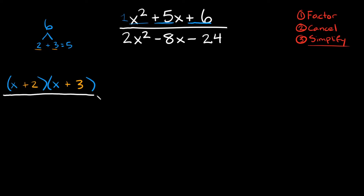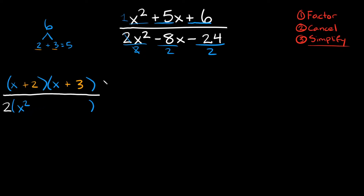Now let's factor the bottom: 2x squared minus 8x minus 24. Is there anything we can pull out from all three terms? Yes — we can pull out a 2, since all three terms are divisible by 2. Factoring out a 2 is the same as dividing each term by 2. 2x squared divided by 2 leaves x squared; negative 8 divided by 2 is negative 4, giving minus 4x; and negative 24 divided by 2 is negative 12, giving minus 12. So we have 2 times the quantity x squared minus 4x minus 12.